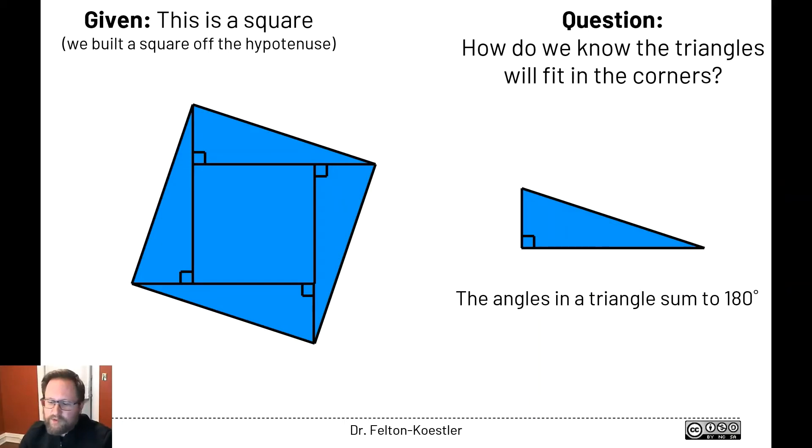If we were doing geometry on a sphere or a curved surface like a saddle, then this would not necessarily be true about triangles. This is one of the defining features of geometry in a plane.